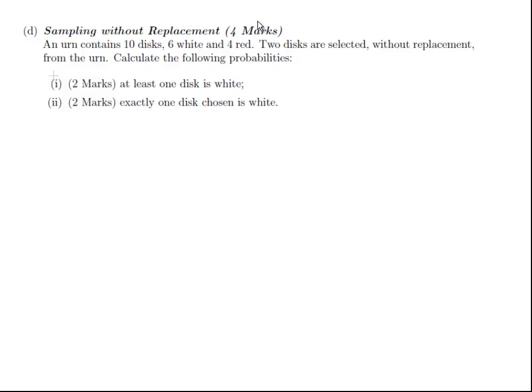This is a sampling without replacement question. An urn contains ten discs, six white and four red. Two discs are selected at random without replacement from the urn. Calculate the following probabilities: at least one disc is white and exactly one disc is white. Let's consider this.